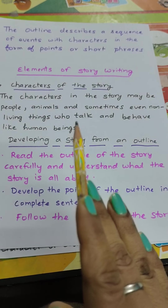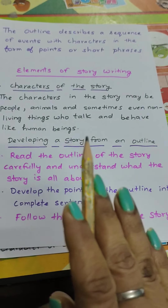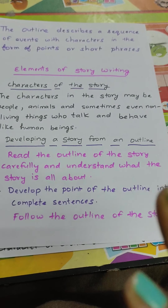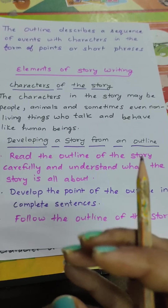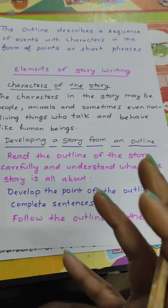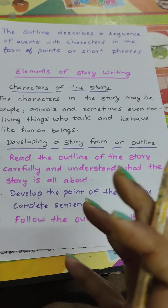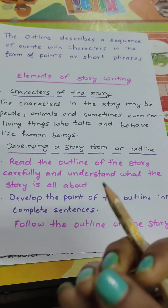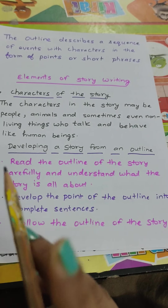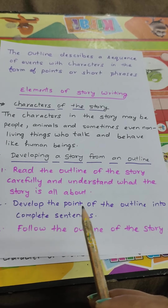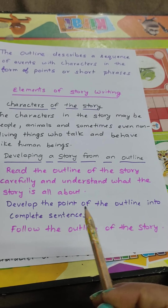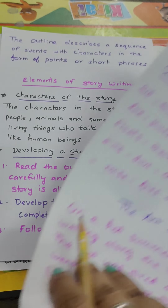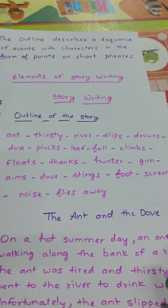First, read the given story outline very carefully. Read it once; if you don't understand, read it two or three times — at least read it carefully and try to understand what the story is actually about. If you read it three to four times, you will definitely get an idea. Second: develop the points of the outline into complete sentences.